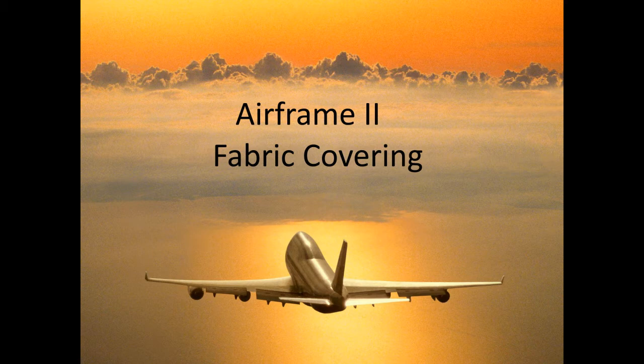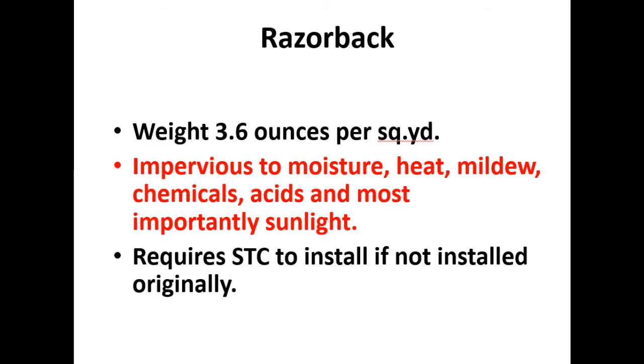For our inorganic or synthetic fabrics, we have two types: polyesters — the Dacron trade name — which includes Stits Polyfiber, Seconite, and Superfly; and fiberglass, whose common trade name is Razorback. Polyester and fiberglass are our two main synthetic fabrics.